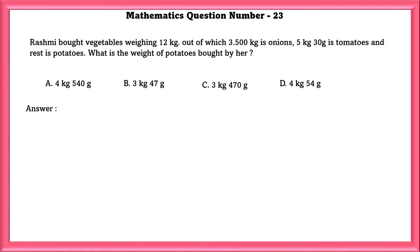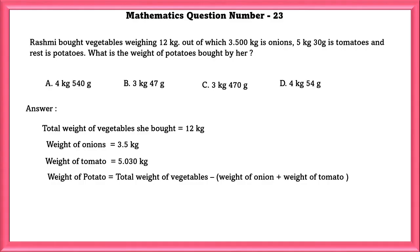Mathematics Question Number 23. Reshmi bought vegetables weighing 12 kgs, out of which 3.5 kgs is onions, 5 kgs 30 gram is tomatoes, and the rest is potatoes. What is the weight of potatoes bought by her? Total weight of vegetables she bought is equal to 12 kgs. Out of which 3.5 are onions, out of which 5.030 kg is tomatoes. Weight of potatoes is equal to total weight of vegetables minus the weight of onion plus weight of tomato, which is equal to 3 kg 470 gram.